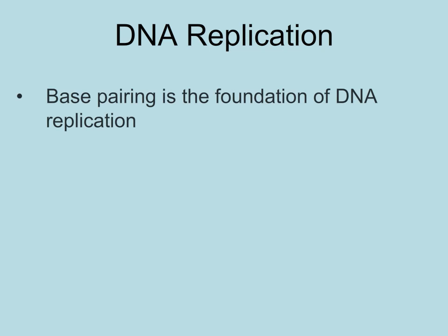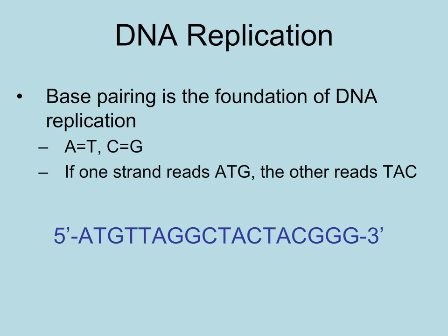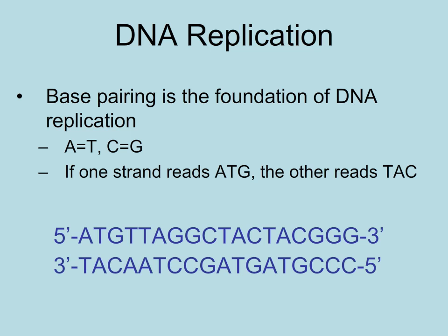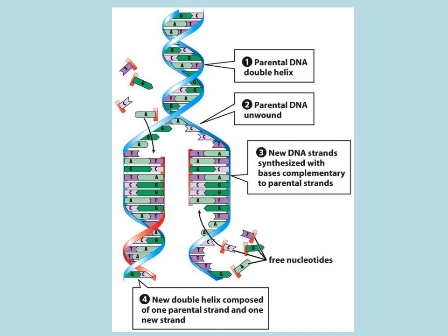The only reason the two parent strands can be copied to produce two identical DNA strands is because of the base pairing rules. As long as we know one strand of the DNA molecule, we can always figure out the complementary strand. Because DNA polymerase adds complementary bases per the base pairing rules, semi-conservative replication works perfectly. The parent strands are used as templates to produce two identical DNA molecules.